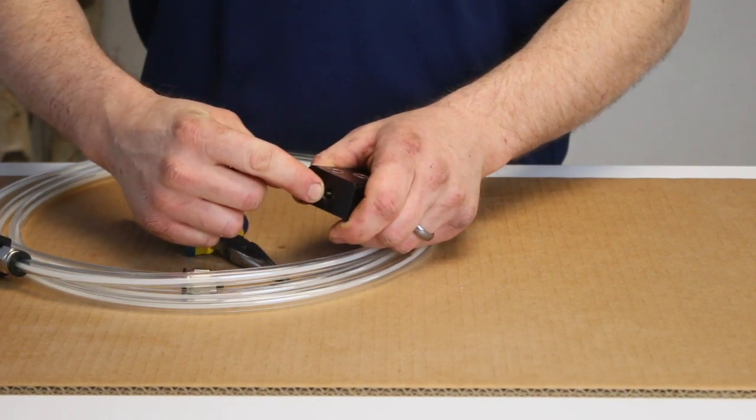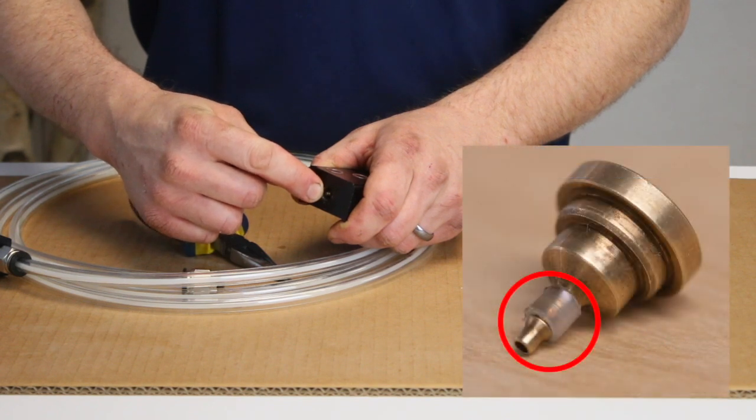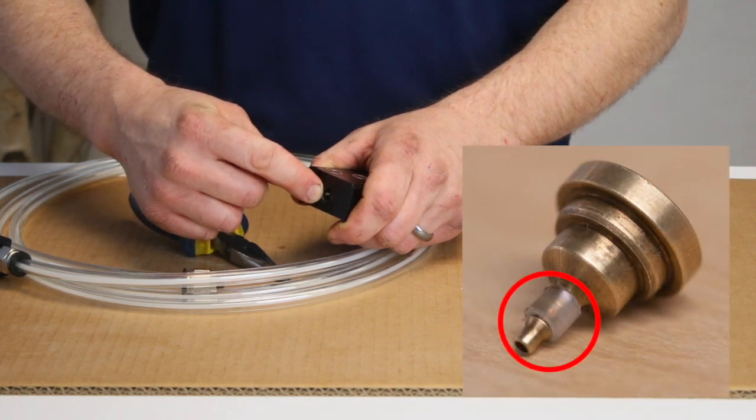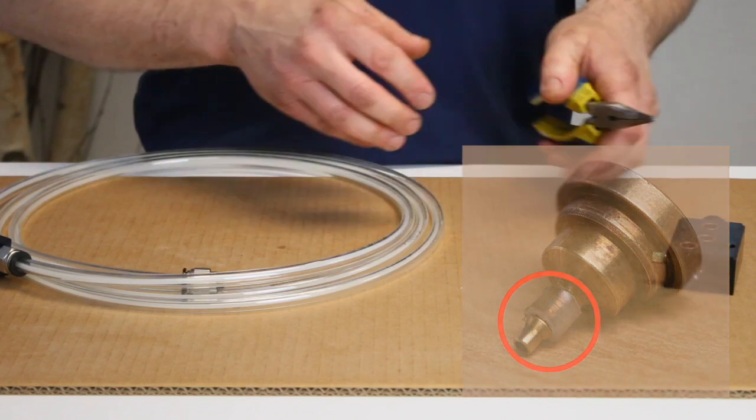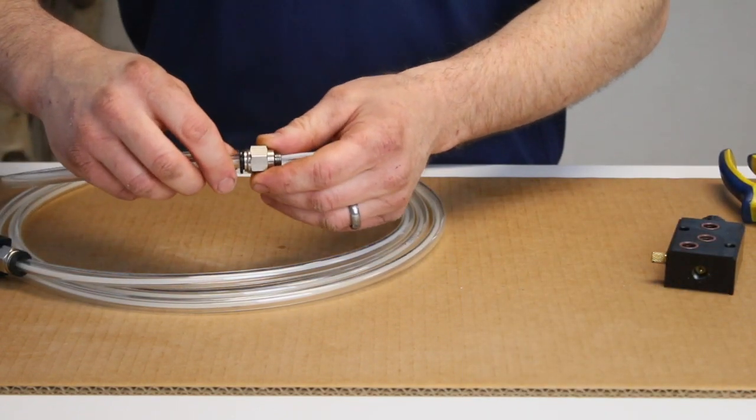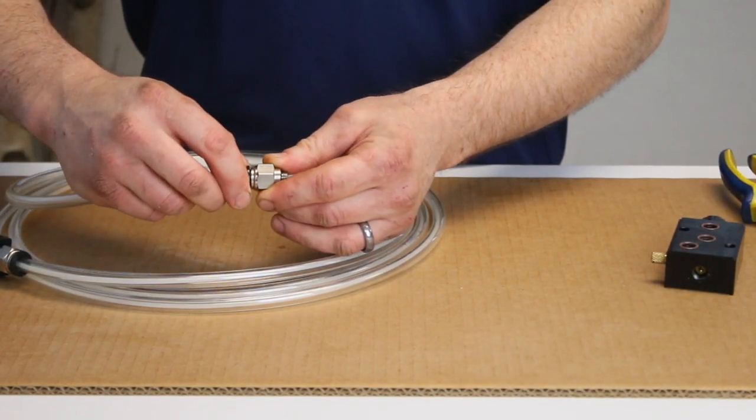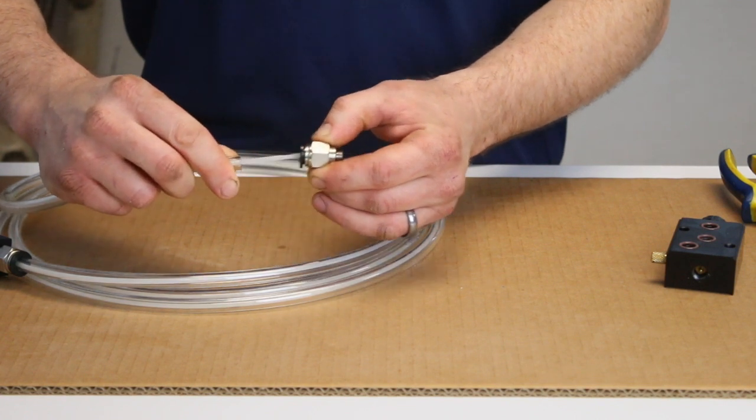Carefully inspect the outlet check valve housing barb to make sure no remnants of the 1/8 inch capillary are still on it. Next, remove the push-in fitting from the 3 1/8 line by pushing in the release ring and pulling it off.